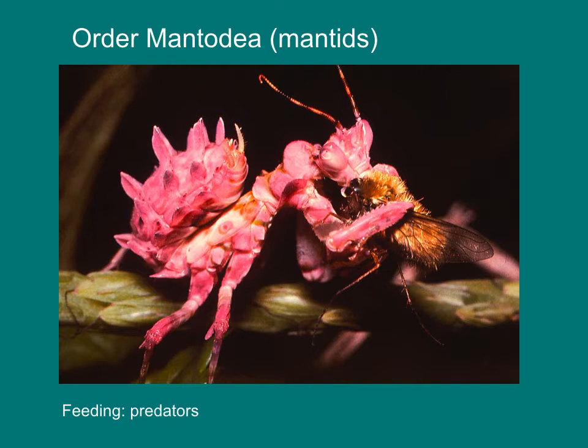Mantids, the order Mantodea, are cryptically colored and sometimes brightly colored predators that have vicious raptorial forelegs for capturing fast-moving prey like bees, wasps, and flies. Mantids have very acute eyes for tracking prey movement.